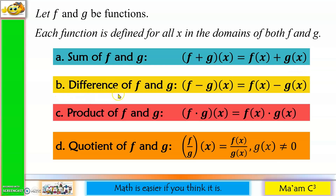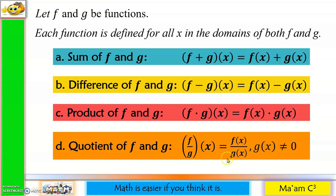Letter B: the difference of f and g is (f − g)(x) = f(x) − g(x). Letter C: the product of f and g is (f · g)(x) = f(x) · g(x). And D: the quotient of f and g is (f/g)(x) = f(x) / g(x), provided that g(x) is not equal to 0.